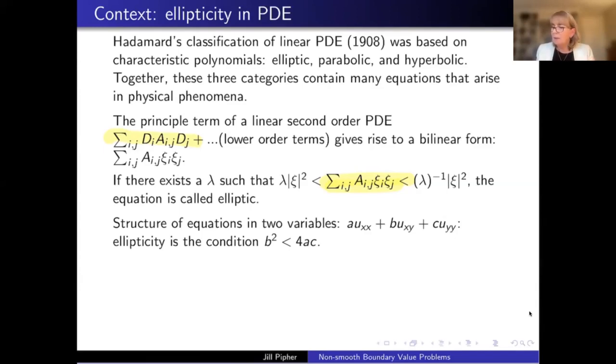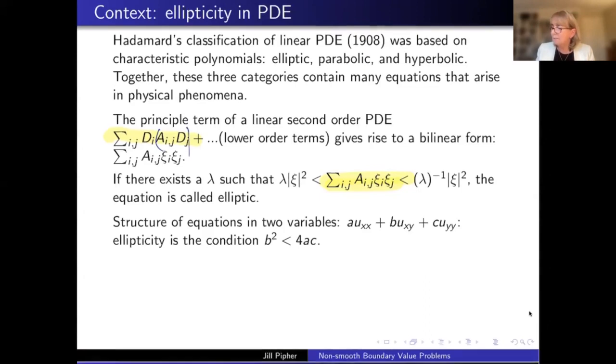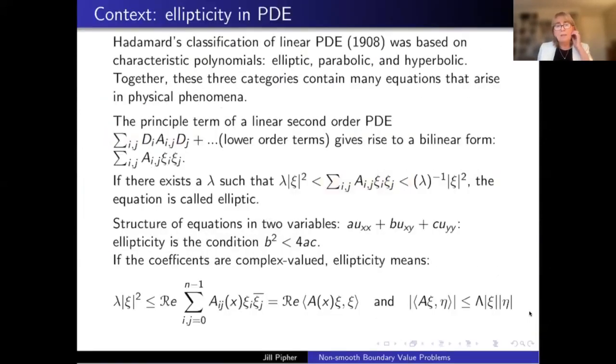So we're looking at second order partial differential equations in n variables, and so they are written in this form where this derivative DI acts on the whole term, AIJDJ. Again, if the equations are complex valued, then ellipticity means that the real part of the complex inner product behaves like a real inner product.